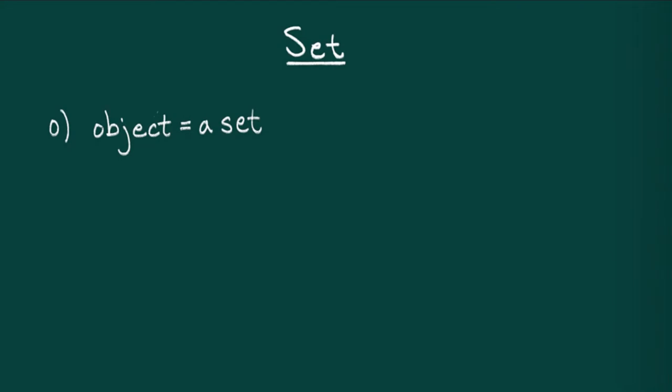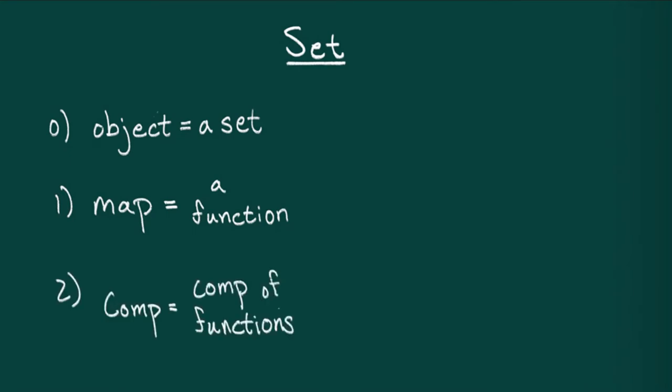Next, what's a map between two sets? I'll define a map f from x to y to be the data of a function from x to y. In other words, an assignment for every element of x, a unique element of y. Finally, what's the composition procedure? In this category, composition is just composition of functions.